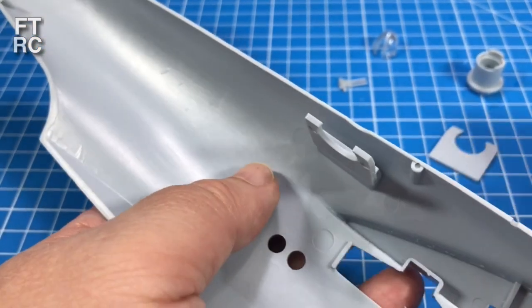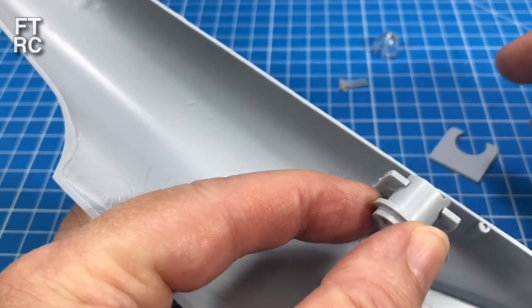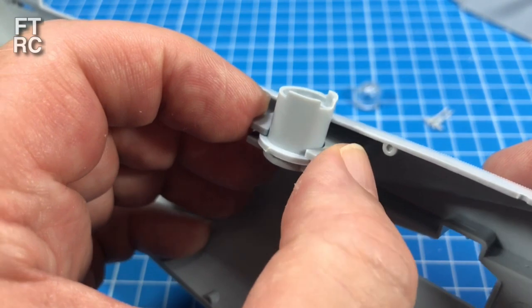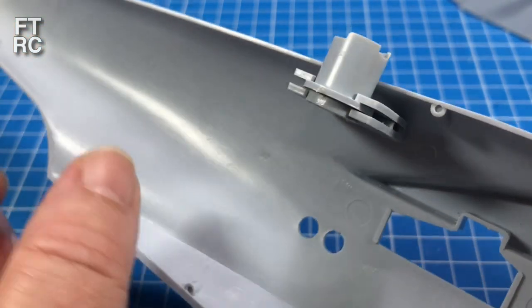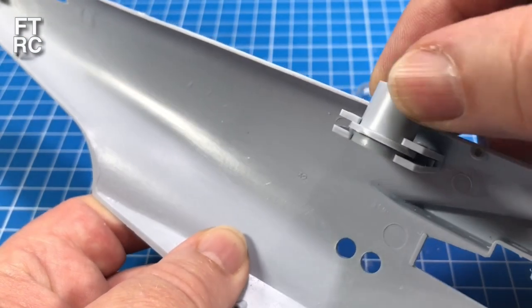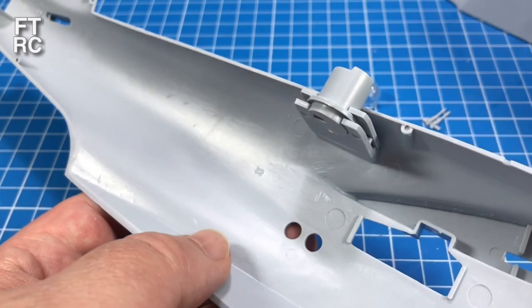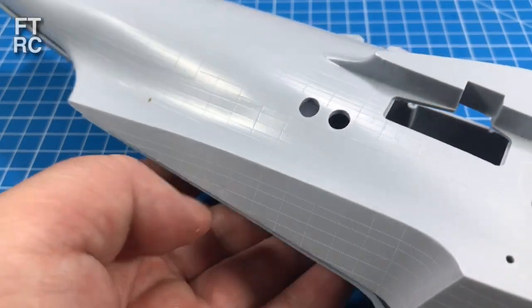So that piece clicks into there and there's quite a good positive fit on that. So it will stay. And then you've got to push up through this one. A bit of fiddling. That's how it should be. Yeah, the rotating part should be in the middle there. So then that whole turret assembly should rotate. So that's quite good.